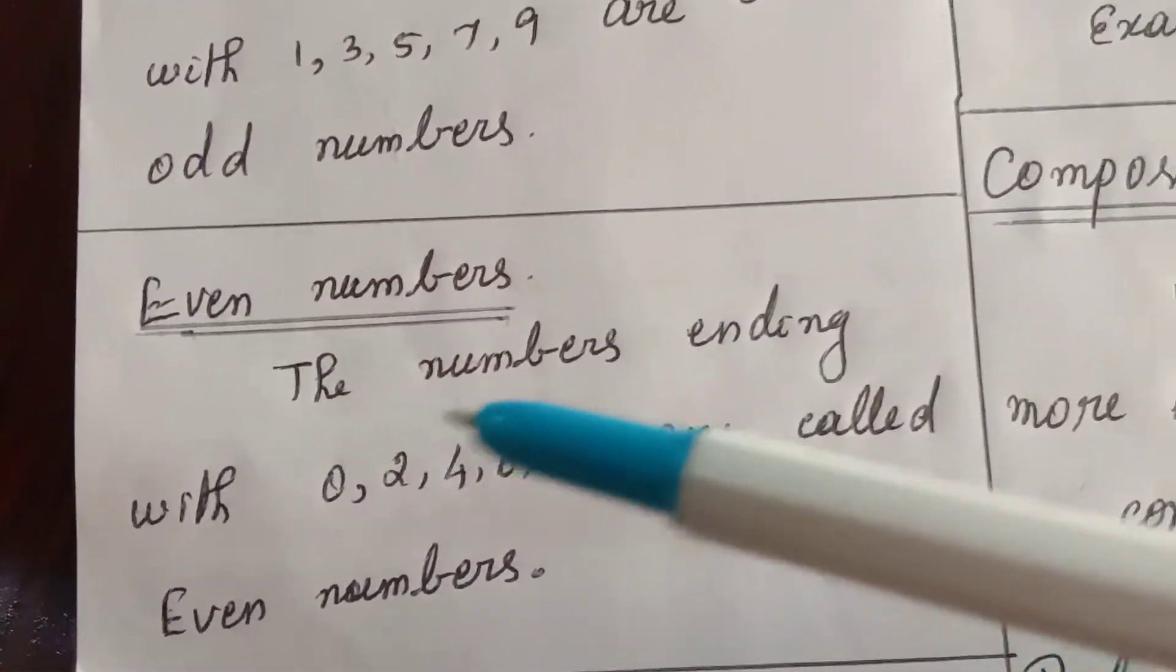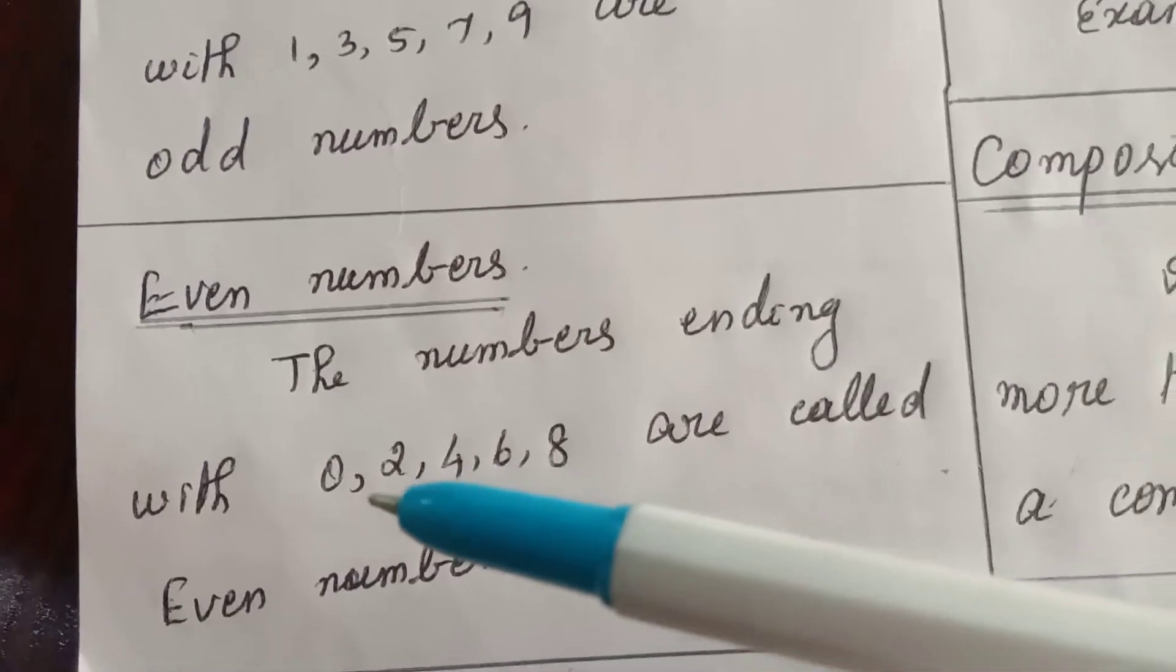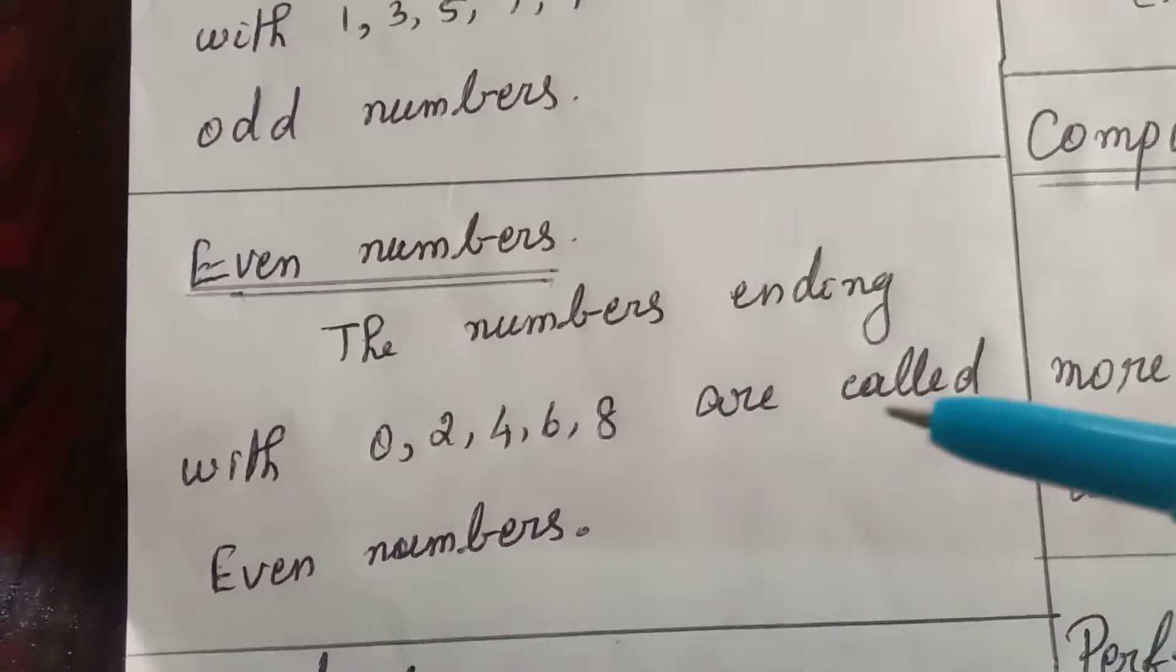What are even numbers? The numbers ending with 0, 2, 4, 6, 8 are called even numbers.